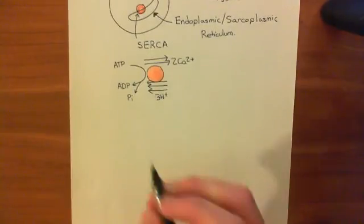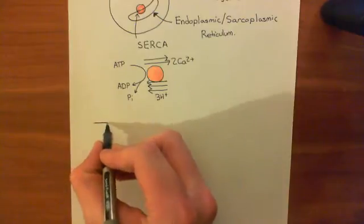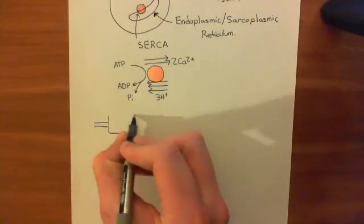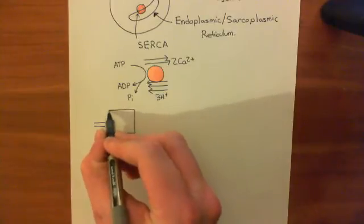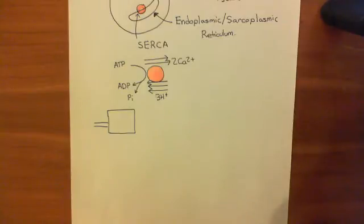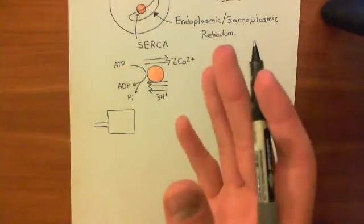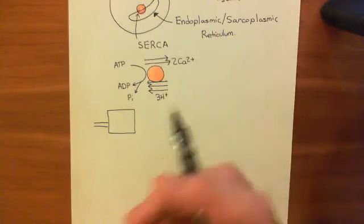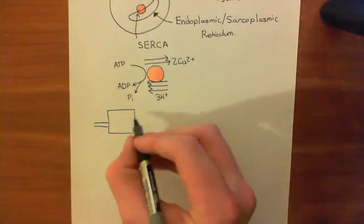A nice way to represent it is to just imagine it as a nice big square. We'll stick to that because it's nice and easy to draw. If you go on Google, you can type in SERCA and you can get crystal structures, but they're very complicated. So we'll just stick with a nice square here.